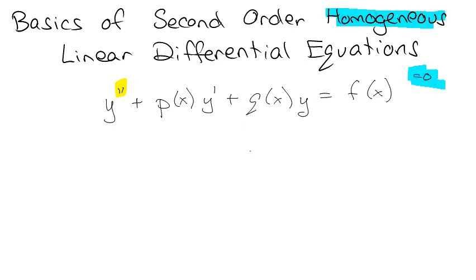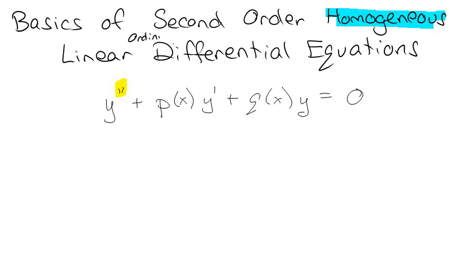This is technically not homogeneous. Homogeneous would mean that it equals zero. So if I wanted to make it homogeneous, I just change f(x) to zero, and now I have a homogeneous linear ordinary differential equation. I should put the word 'ordinary' in there too, because it's not partial. Math is easy, but spelling is hard. So: basics of second order, homogeneous, linear, ordinary differential equations. It's not quite as straightforward as first order linear ODEs, but we're going to start easy.